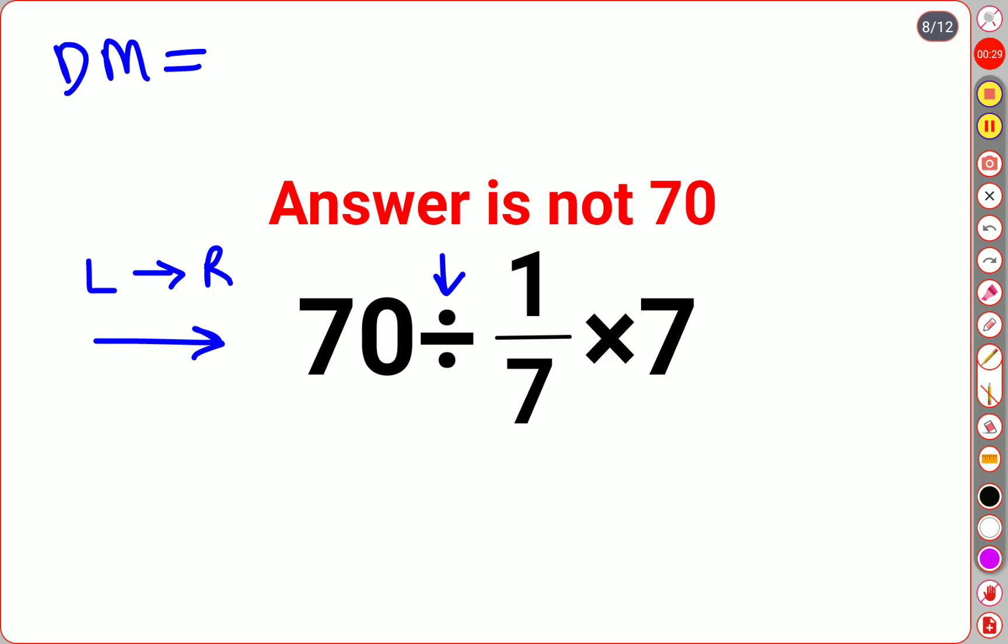So first we will do 70 divided by 1 upon 7. So whenever you have division, we will follow the rule of KCF where K stands for keeping the first number as it is, C stands for changing the division sign to multiplication, F stands for flipping or taking reciprocal of 1 upon 7 which is 7 multiplied by 7.